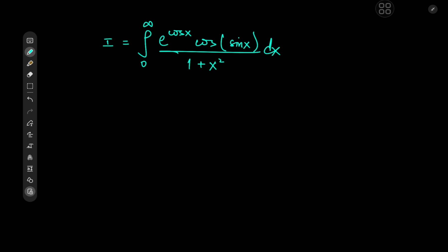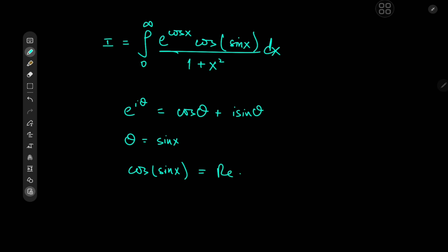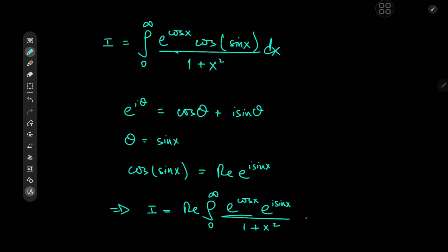How on earth do you even begin with an integrand that looks like this? Well, you have an exponential function multiplied by a trig function. We know that e to the i·theta equals cosine theta plus i times sine theta. So if we replace theta by sine x, then we get cosine of sine x being the real part of e to the i times sine x. That implies the target integral I equals the real part of the integral from zero to infinity of e to the cosine x times e to the i times sine x, divided by 1 plus x squared, dx.